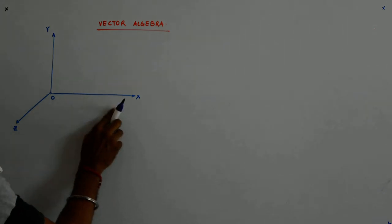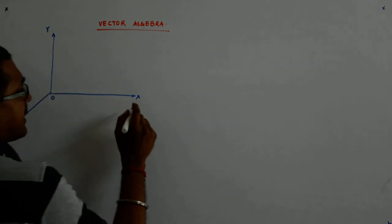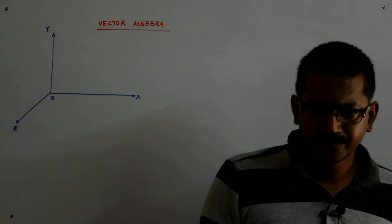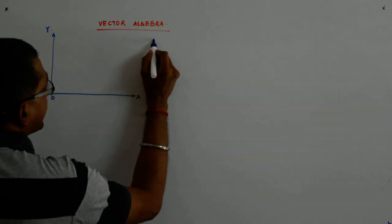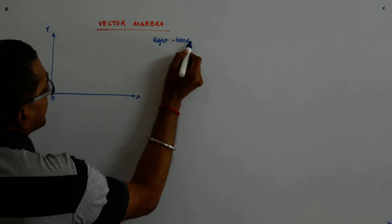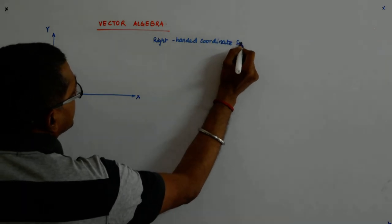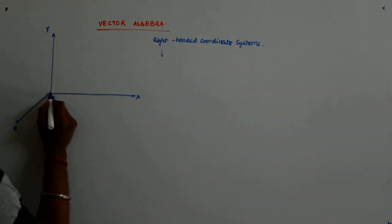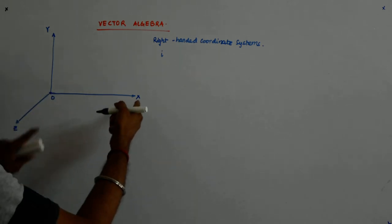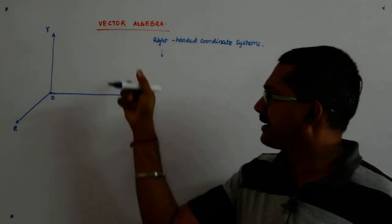x, y, z cannot be randomly named. It will be wrong, because we are dealing with right-handed coordinate systems. In a right-handed coordinate system, if you hinge this point and try to rotate x to y, it is an anti-clockwise movement.